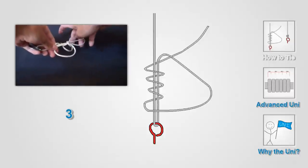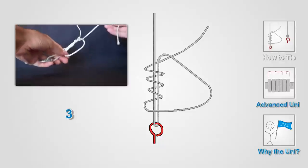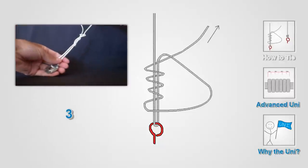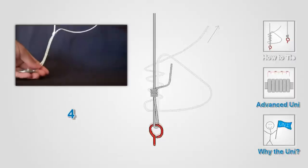The amount of wraps can vary, but as a general rule, the more wraps the better. Then, pull the tag end until the wraps come together, forming an adjustable loop.